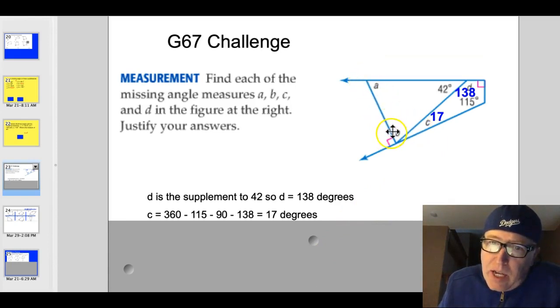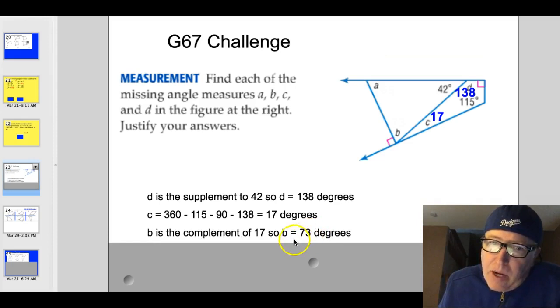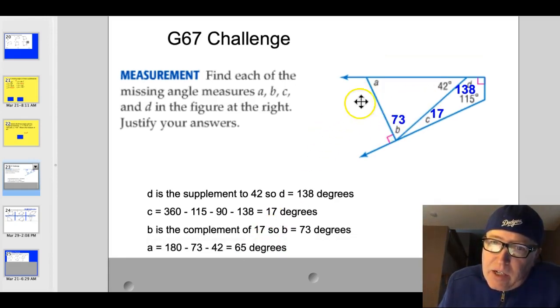Now, this is a 90 degree angle on this side. That means this is a 90 degree angle over here. So B is going to be the complement to C. So if C is 17 degrees, we can take 90 minus 17 and find that B will be 73 degrees. And now you've got a triangle here, and you can just take and find a by taking 180 degrees. A will be equal to 180 degrees minus 73 minus 42 or 65 degrees. Okay? So that one is actually kind of fun to work its way through.